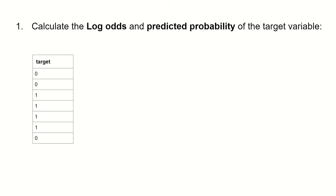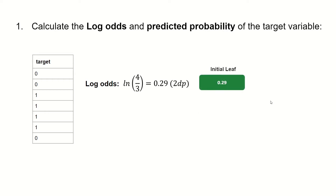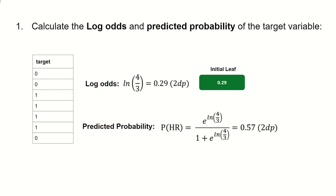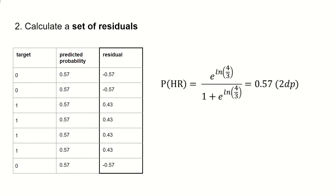So here we have our target variable, which is heart disease diagnosis. The log odds is given as the natural logarithm of the number of times our case is present, which in this case is four times, divided by the number of times our case is absent, which is three. So there are four ones and three zeros, and this gives us a value of 0.29. This forms the initial leaf of our gradient-boosted trees. We convert this log odds into a predicted probability by using the standard logistic function: e to the power of our log odds divided by one plus e to the power of our log odds, which gives us a value of 0.57.